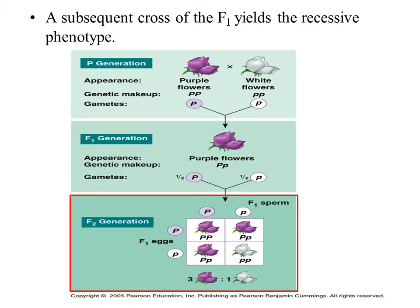A subsequent cross of the F1 progeny would yield the recessive phenotype again. So in the F2 generation we see that we have three purple flowers and one white flower. The white flower ends up reappearing but only in the F2 progeny.